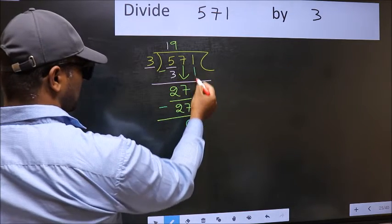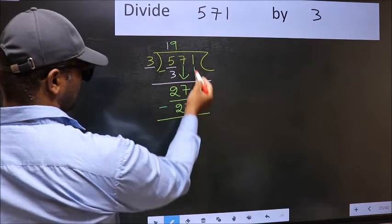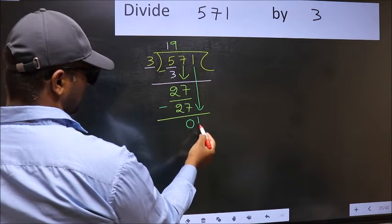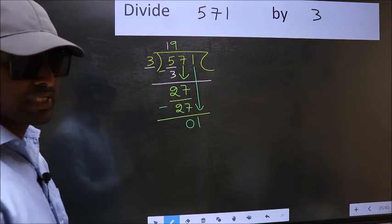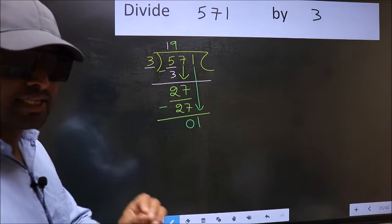After this, bring down the beside number. So 1 down. After this step, the mistake happens. And the mistake is this.